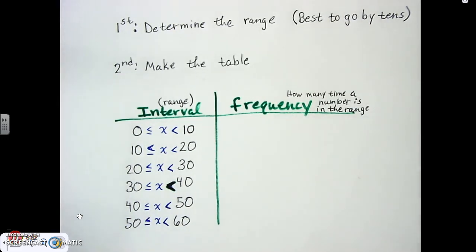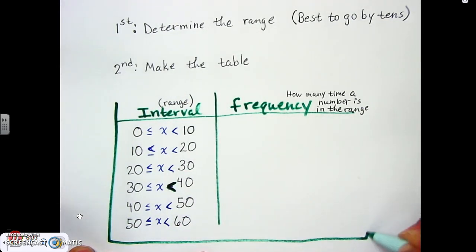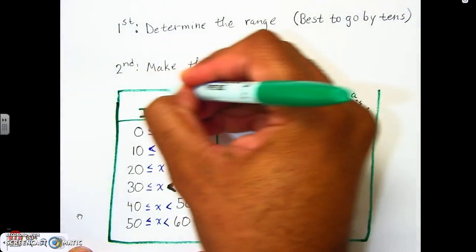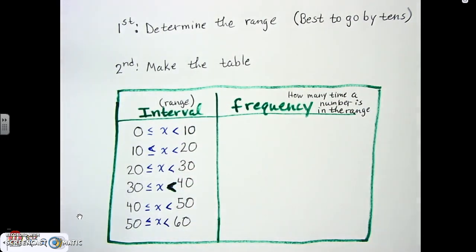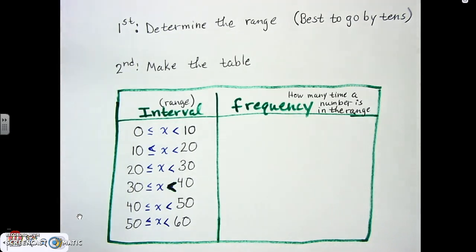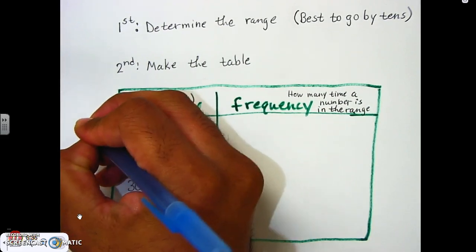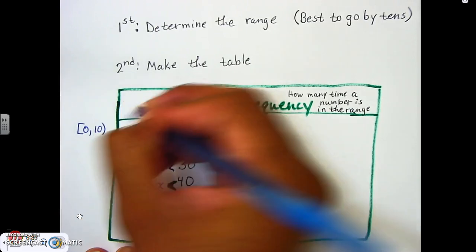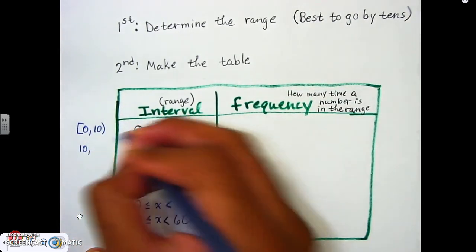Now let's box everything in. This will look even better on lined paper because everything lines up correctly. Also, remember from interval notation that we use brackets and parentheses: a less-than-or-equal-to sign corresponds to a bracket, and a less-than sign corresponds to a parenthesis. That's all that's happening here with the notation.